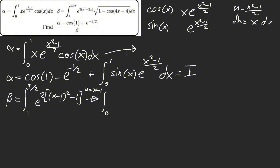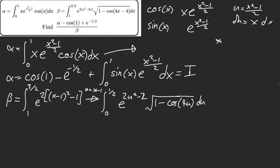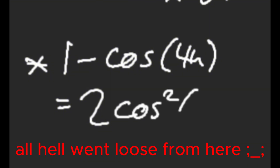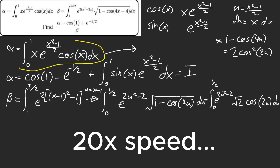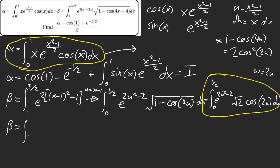x minus one here — I get zero; three-halves minus one is one half. Interesting, so it's not zero to one, it's zero to one half. And I get 2u²-2. After that I get the square root of 1 minus cosine(4u). Now, 1 minus cosine(4u) equals 2sin²(2u).